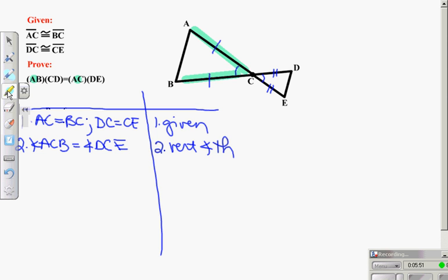So I'm looking to set these two triangles similar, set up their ratio of their sides, and then cross multiply.